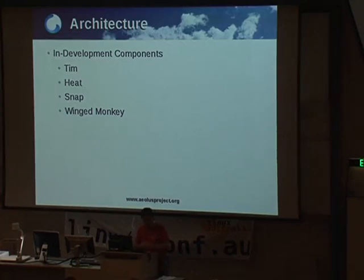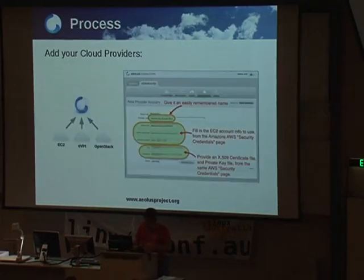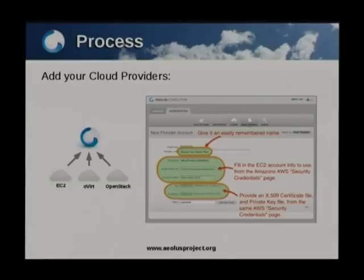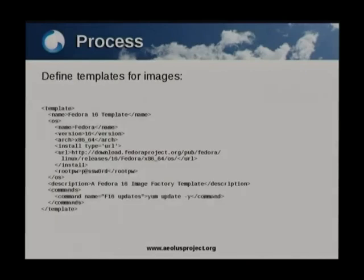Then there's WingedMonkey, a self-service portal for non-administrative users, which is also in development. The process is quite simple. Step one, you add your cloud providers — you might have an EC2 provider, an Overt setup, or an OpenStack setup — and it's just a matter of entering access details into ELIS. Then you define templates for your images.